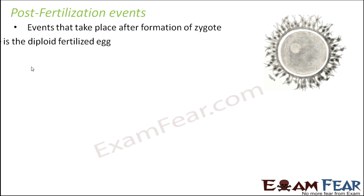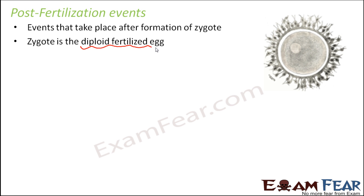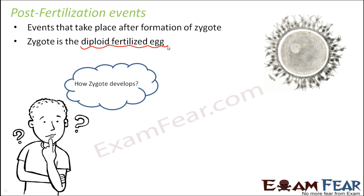The zygote is basically a diploid cell — it is nothing but the fertilized egg. The same egg becomes a zygote when the sperm enters into it, since it becomes diploid. So the zygote is a single diploid fertilized cell that gradually develops into an individual by a repeated number of cell divisions and by cell differentiation.